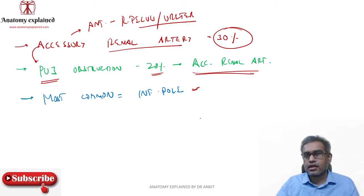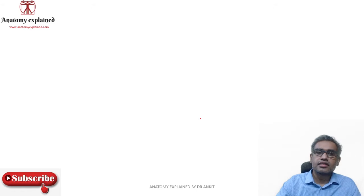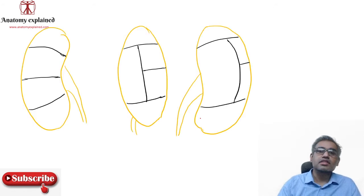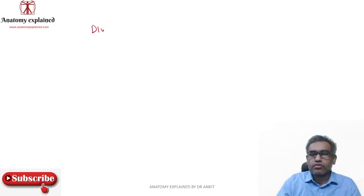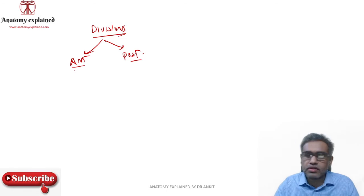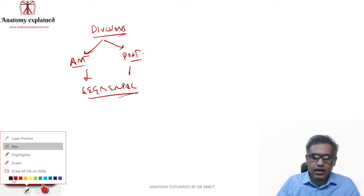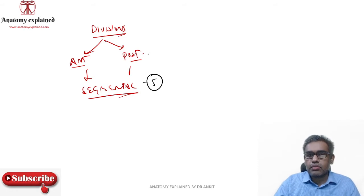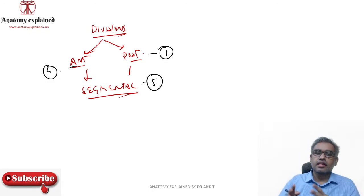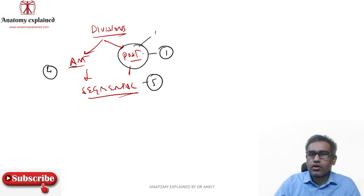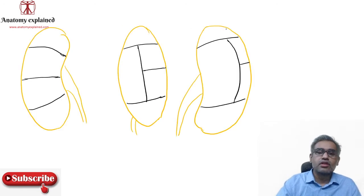The renal arteries enter and also give branches to the adrenal gland and to the ureter. As the renal artery enters toward the hilum, it divides into the anterior and the posterior division before entering the hilum. These two divisions give off the segmental arteries. There are around five segments in the kidney — the posterior division gives off one segment, and the rest of the four segments are given by the anterior division.